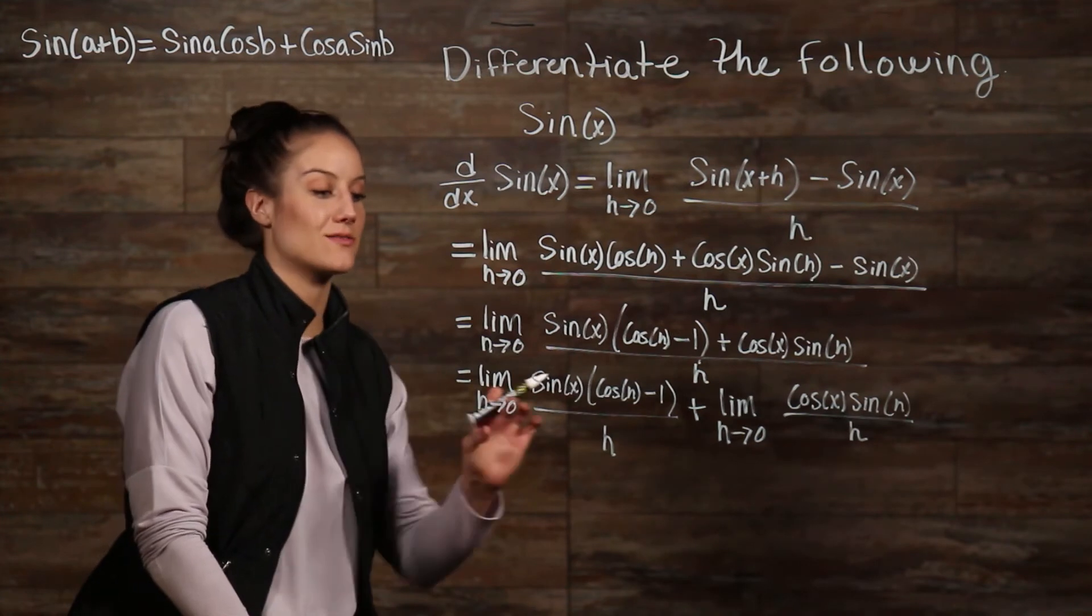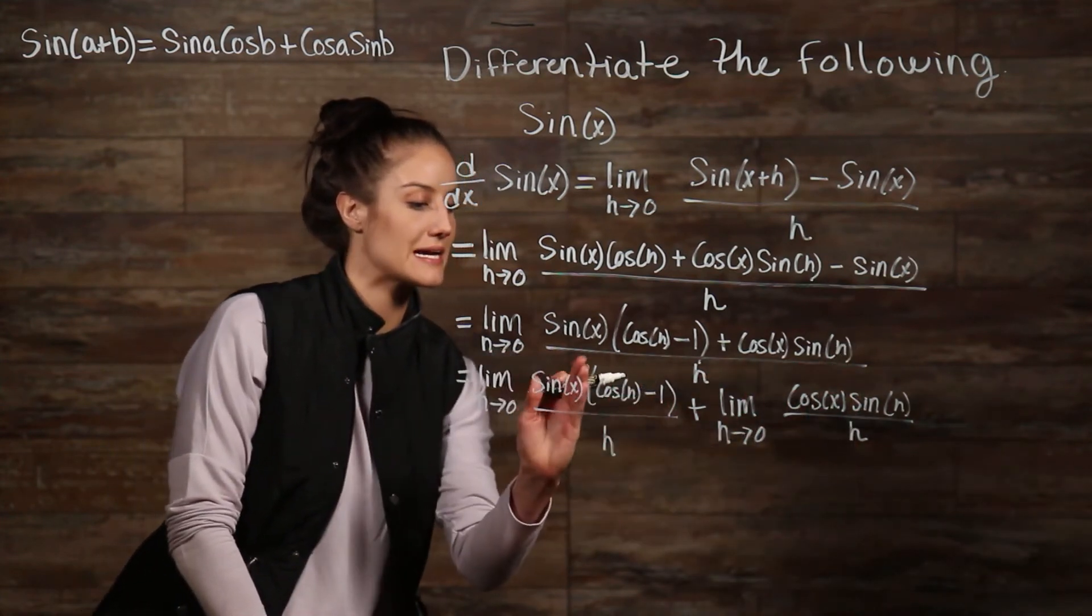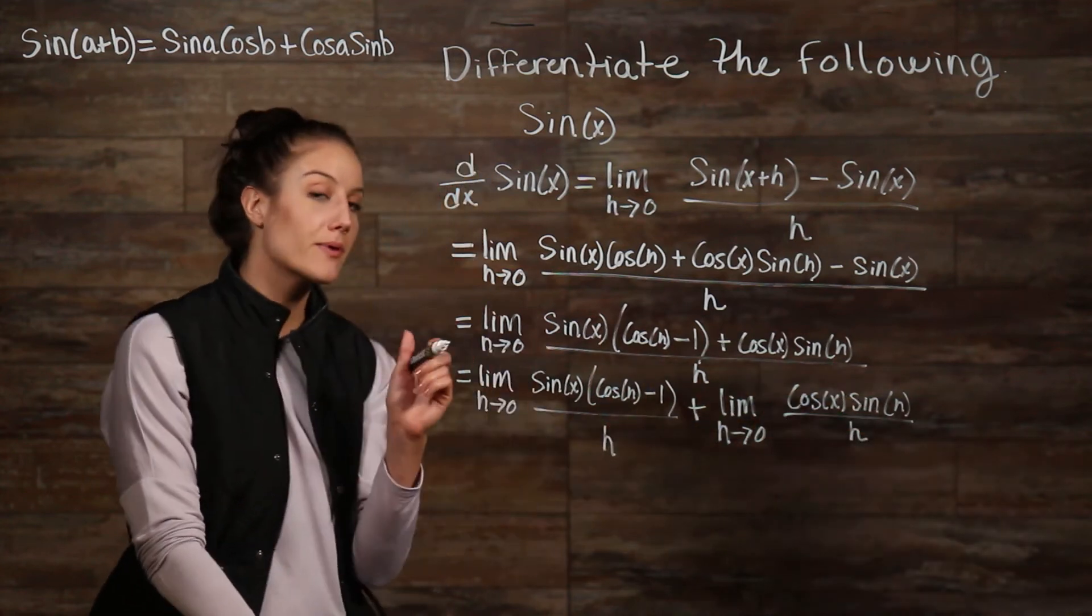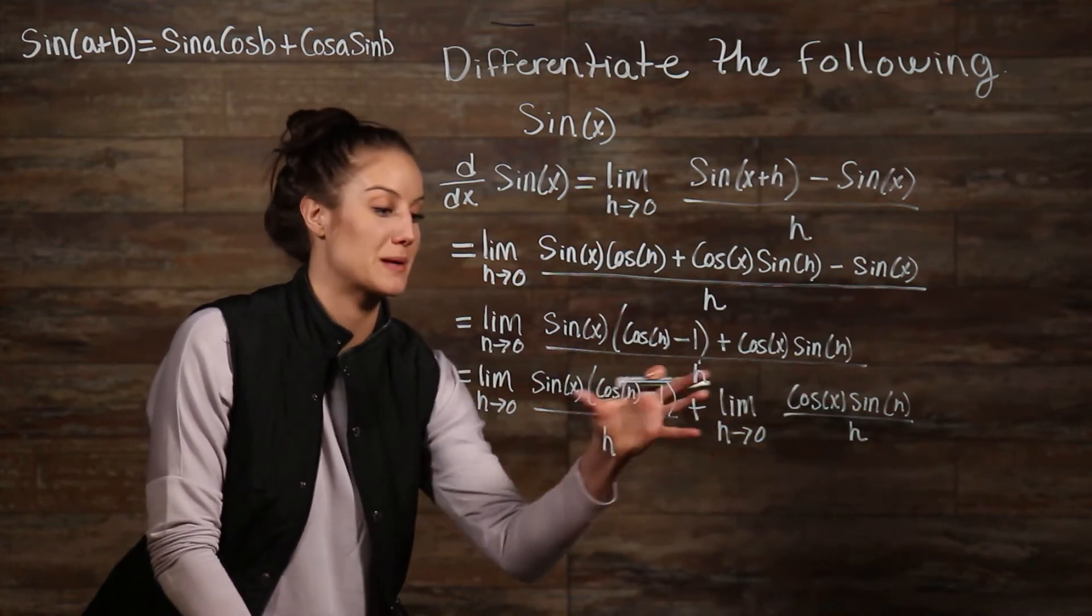Now, we can start to see how these two things are starting to look like the facts that we have. This cosine of h minus 1 over h here, sine of h over h here. But the problem is, we still have this pesky sine of x and this cosine of x that are being multiplied.